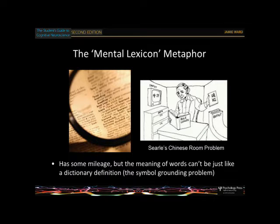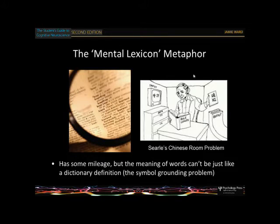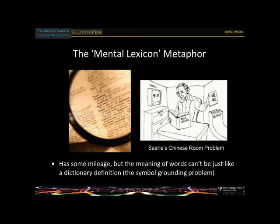How is the meaning of words represented in the brain? We often think of the brain as having something like a mental dictionary — a lexicon — where a word has its pronunciation, its meaning, its syntactic category (noun or verb), and how you use it in a sentence. Searle, a philosopher, introduced the Chinese Room problem: a person in a room answers sentences presented in Chinese by implementing rules, but doesn't actually understand Chinese — he's processing words without understanding them.